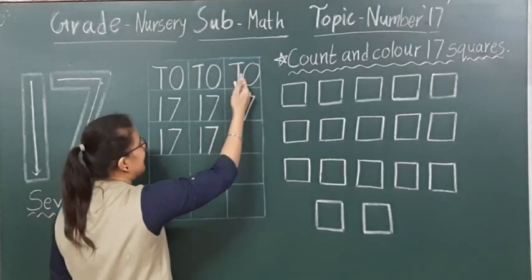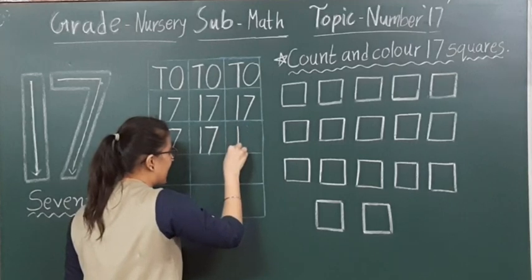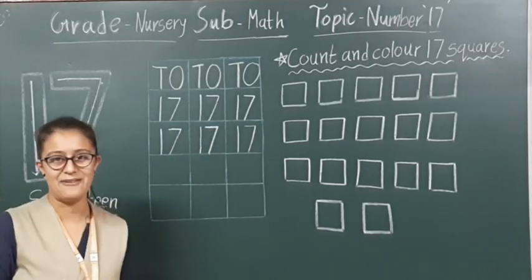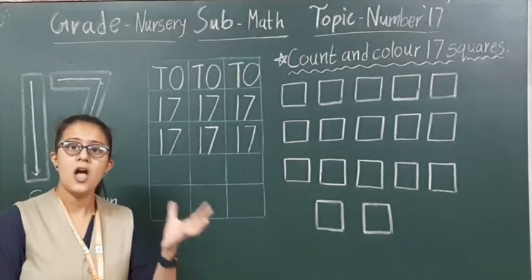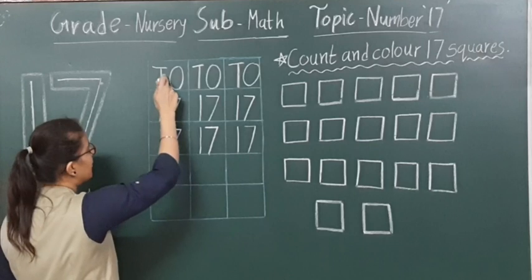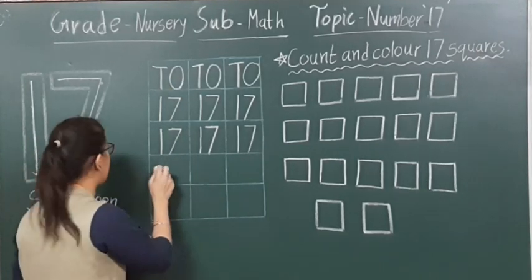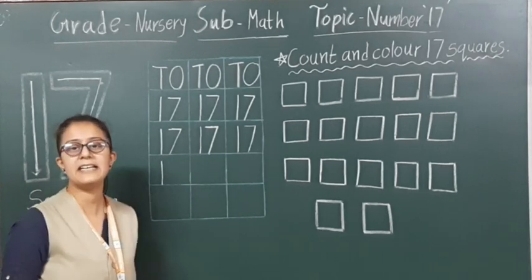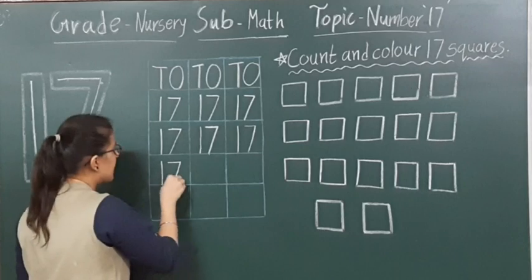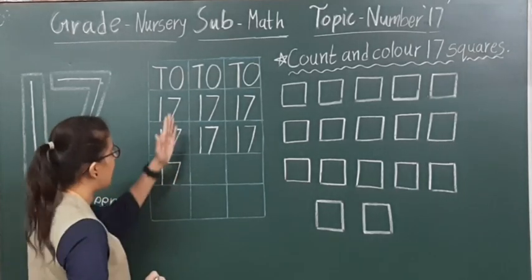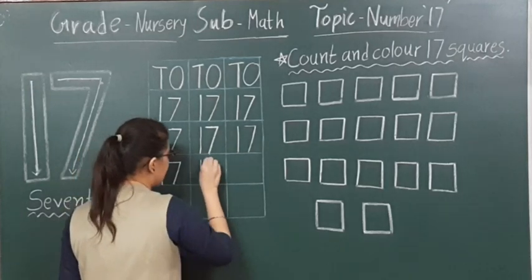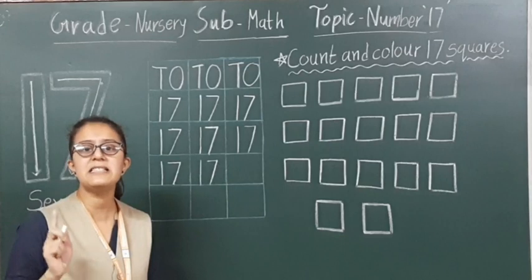Now we will write by ourselves, without any dots. Below the D, you have to go straight and write number 1 — simply one standing line. Below the O, we have to write number 7. One, seven — 17. Again, below the D write number 1, below the O write number 7 — number 17. You have to make sure that the number touches the bottom line.